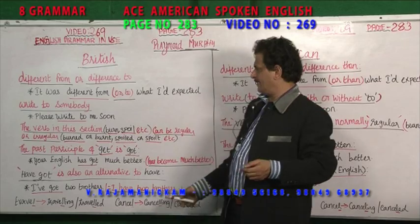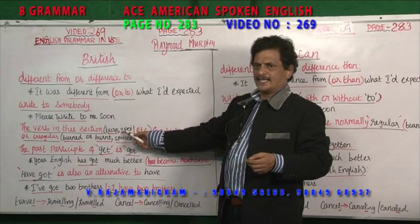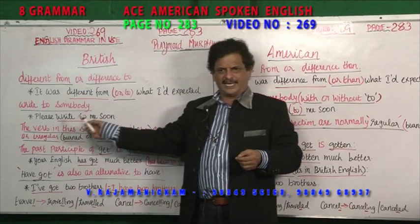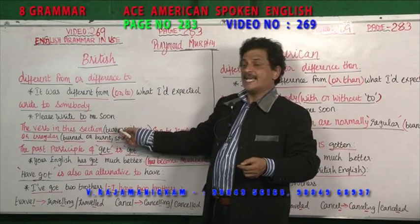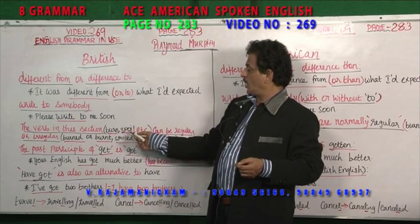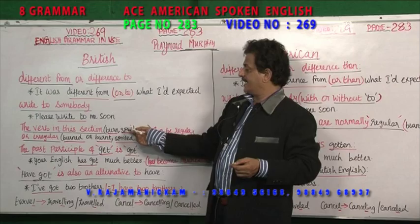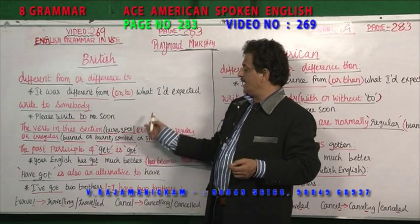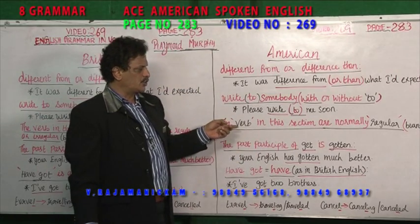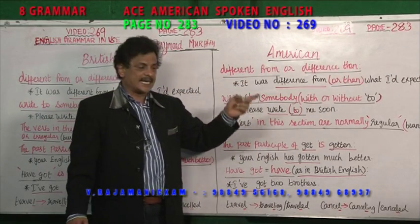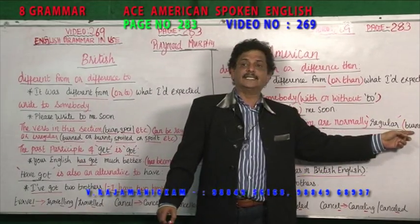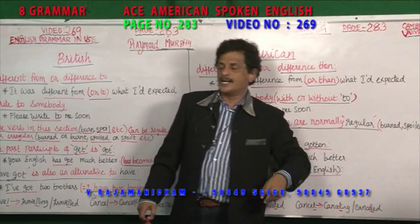Now, verbs in this section — "burn" and "spoil" — can be regular or irregular. Regular verbs add "-ed" in the past tense: "burned", "spoiled". In British English you can use either "burned/burned" or "burnt/spoilt". But in American English, you are supposed to use only the regular form: "burned" and "spoiled", not "burnt" and "spoilt".